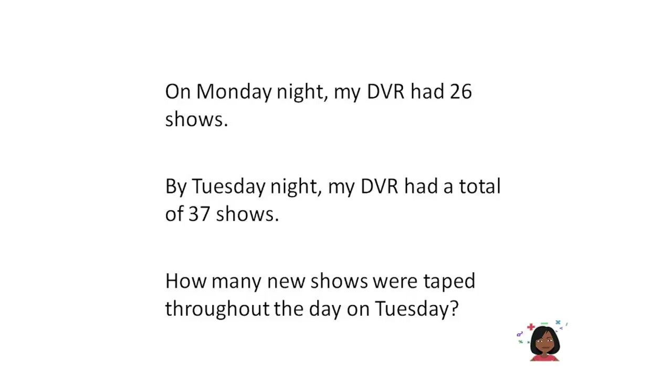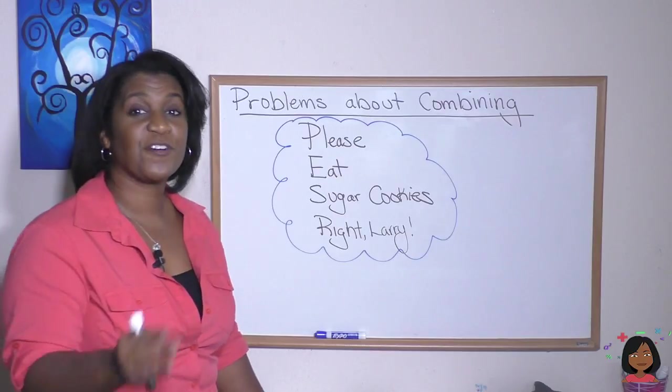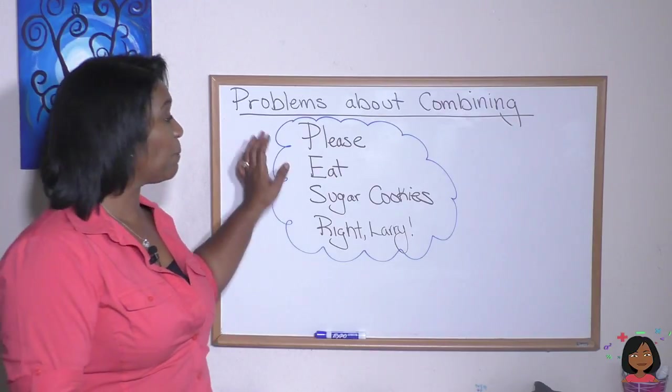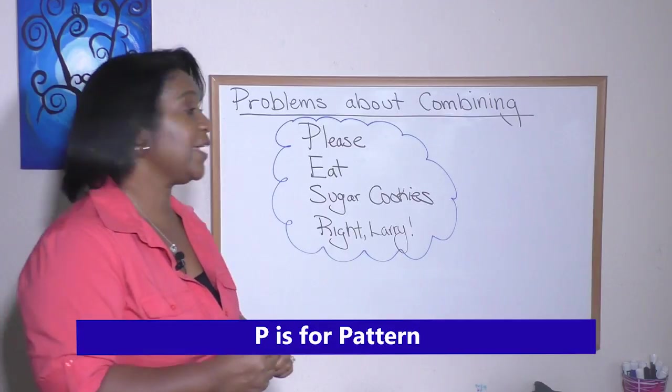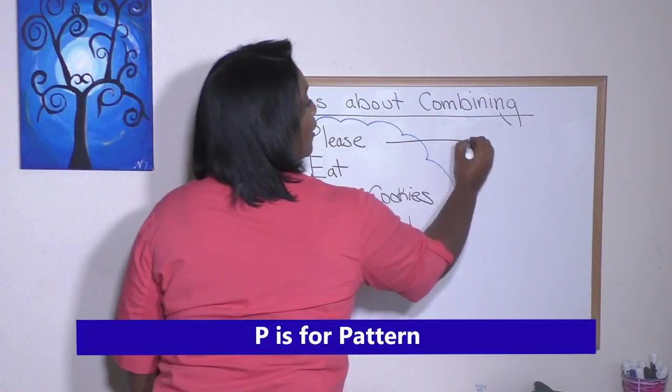On Monday night, my DVR had 26 shows. By Tuesday night, my DVR had a total of 37 shows. How many new shows were taped throughout the day on Tuesday? The first thing that we do, we start with the P in please. P stands for pattern.